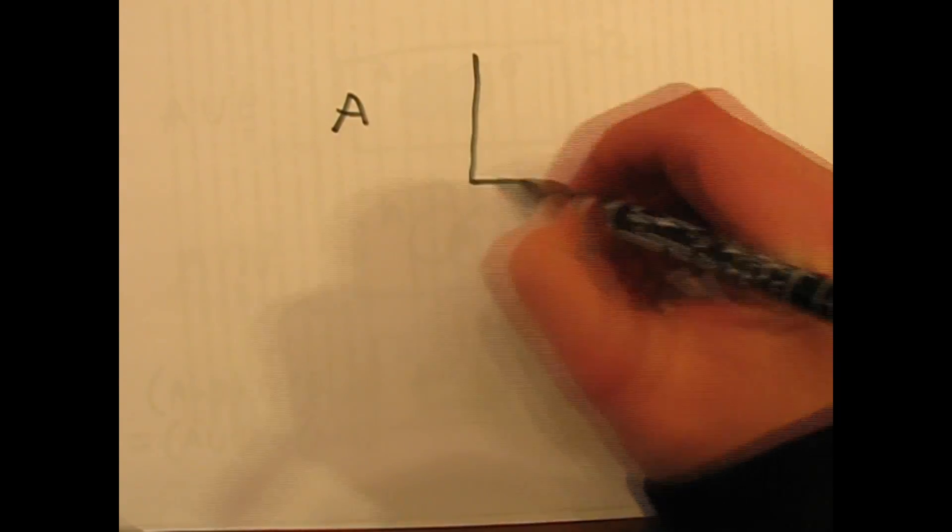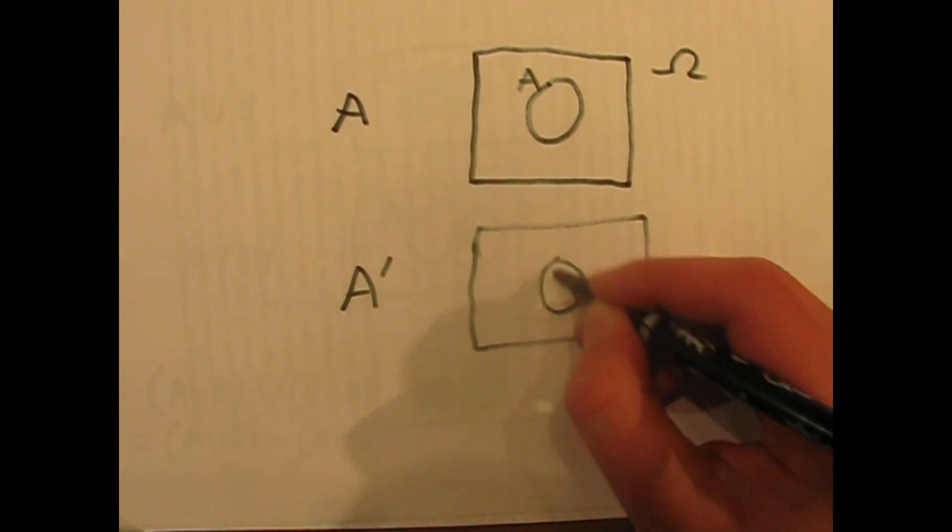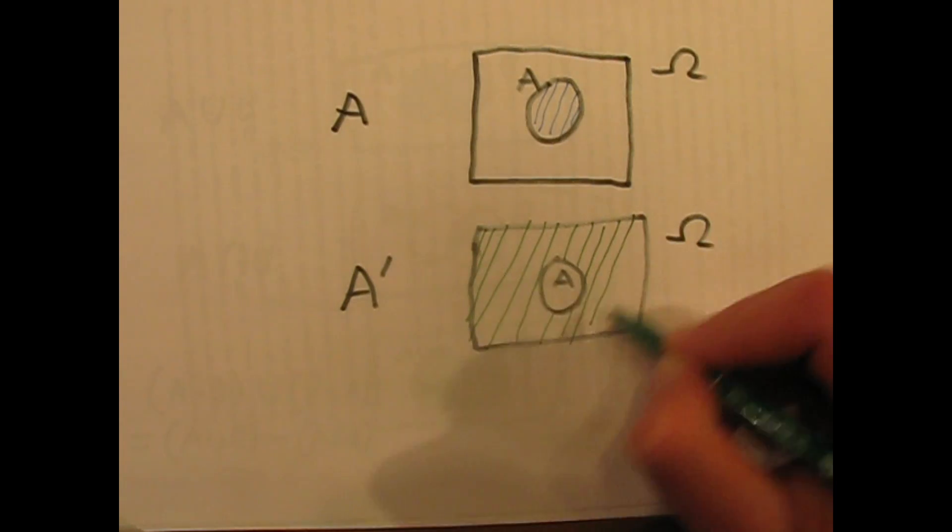There is also a thing called a complement of a set. This is a set that contains all of Omega's components that are not included in the set. We can also say that Omega's complement is the empty set, and the empty set's complement is Omega.